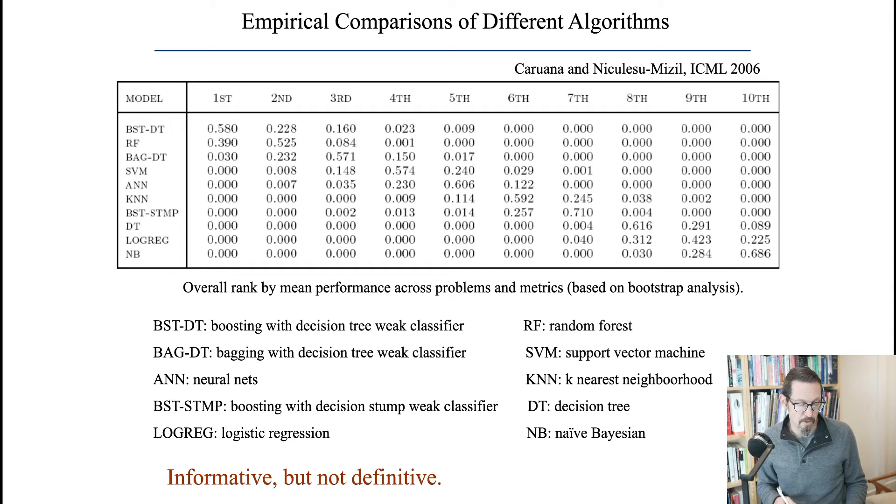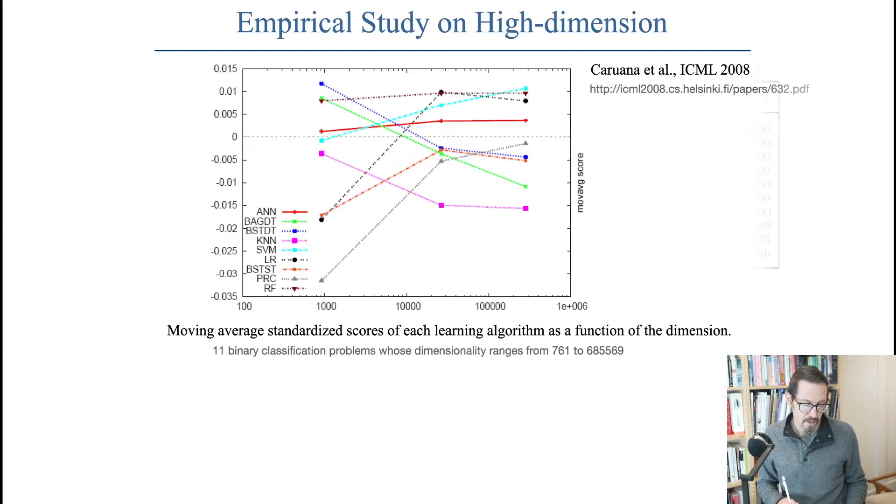There is a follow-up paper from 2008 by Caruana Nicolescu-Mazil and a third party. In this new one, they looked at a bunch more data sets. These data sets are much bigger in number of variables. They look at these data sets across multiple different algorithms once again, trying to check out, as we get large numbers of features, which algorithms are doing the best on average.